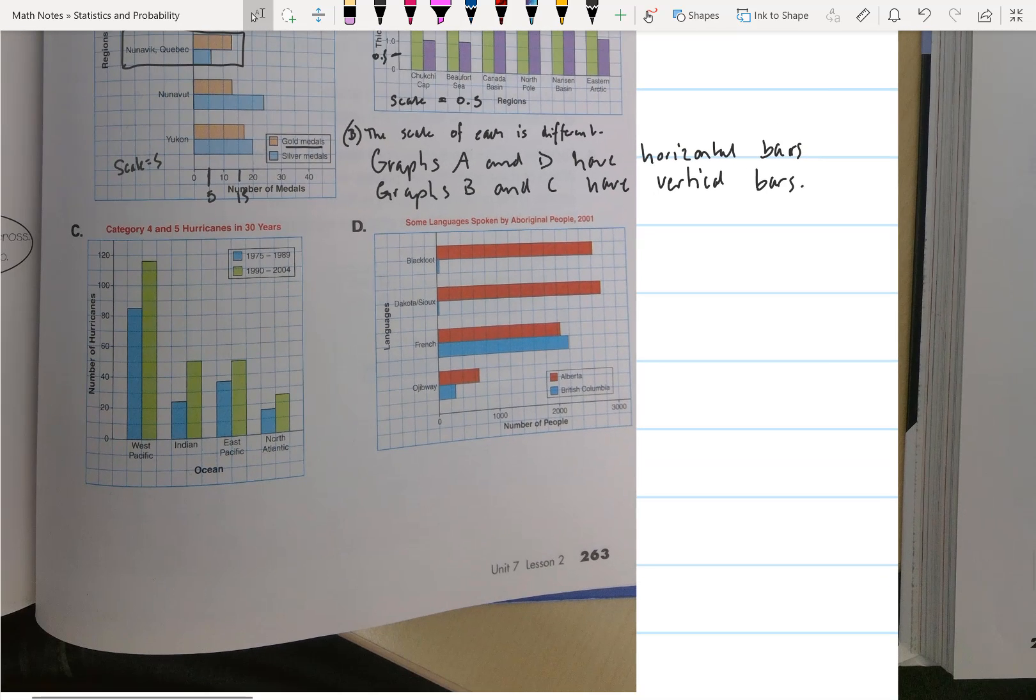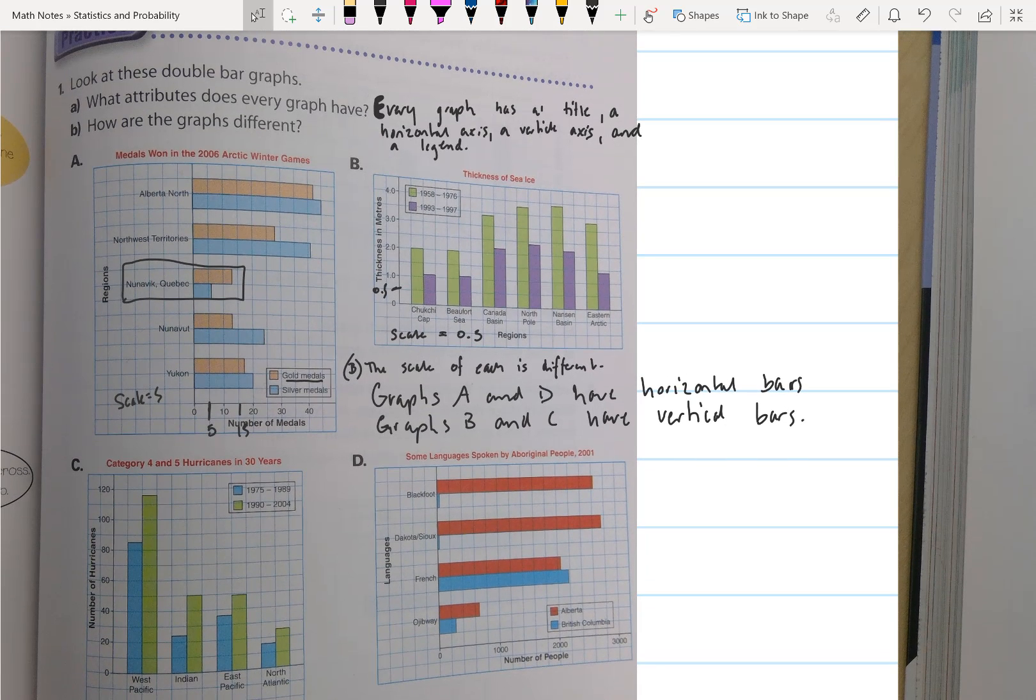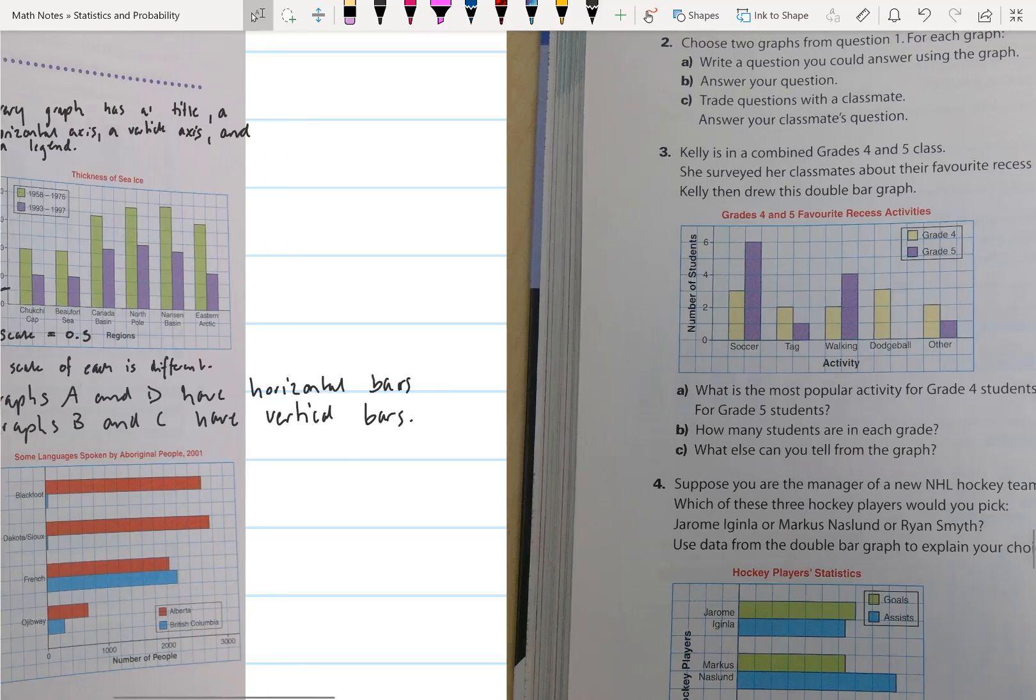All right, that takes us to the end, and obviously your answers for that question are going to vary. But those are some examples of answers you could have had. So let's move on to question 3.